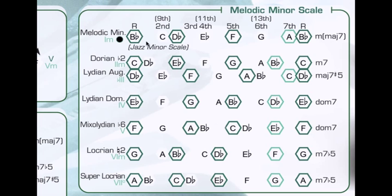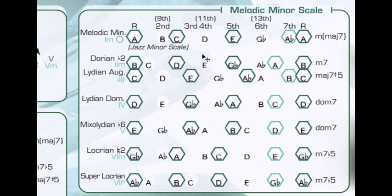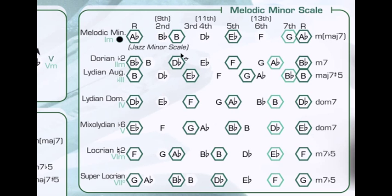Jazz players like this scale because of its versatility and the way it sounds. What we have here is a B-flat minor melodic scale, but since this is the harmonizer we can change it to whatever key we want. Let's move it through the scale and go to A-flat, just like that.